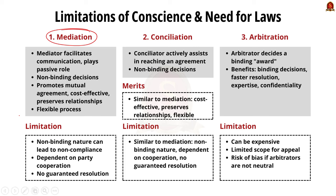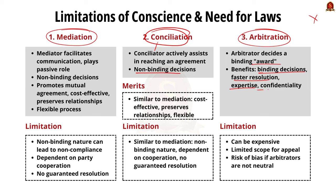Second, conciliation — an impartial third party called a conciliator plays an active role and assists parties to reach a mutually satisfactory agreed settlement. Such agreements are non-binding. The merits and demerits are similar to mediation. Third, arbitration — the arbitrator decides an award on the dispute that is mostly binding on the parties. Benefits include binding decisions, faster resolution, expertise of arbitrators, and confidentiality. Limitations include expensive awards, limited scope for appeal, and risk of bias if arbitrators are not neutral.